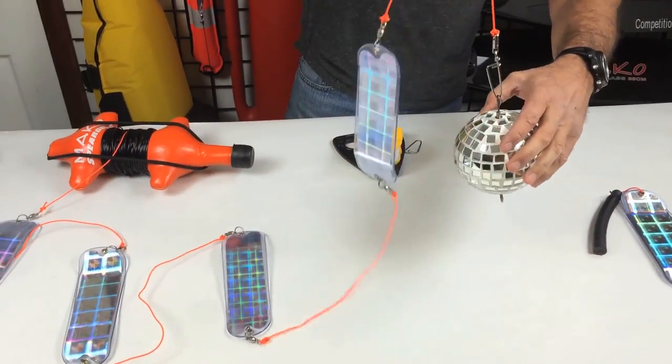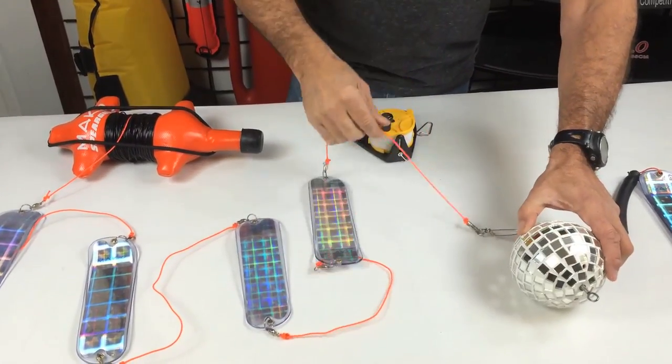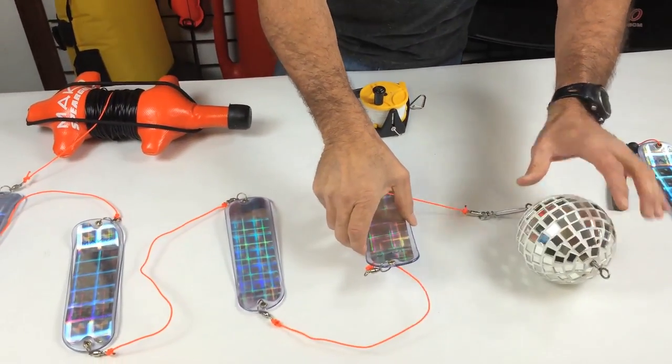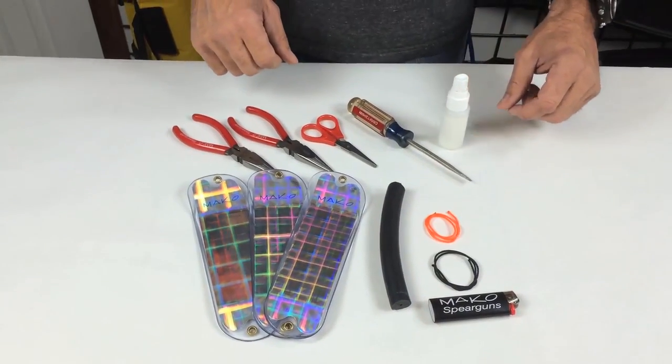For even more light action, add the flasher ball to the bottom of your flasher string or hook it separately to another reel and let your flashers dance freely. Or go untethered with our fish flasher kit.